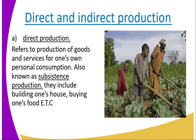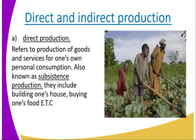We start with direct and indirect production. When we talk about direct production, it refers to the production of goods and services for one's own personal consumption. For example, looking at that image next to us, it is showing a family cultivating what they need to consume for themselves. This is also referred to as subsistence production.